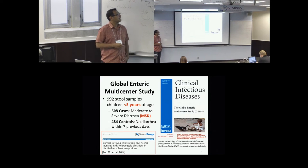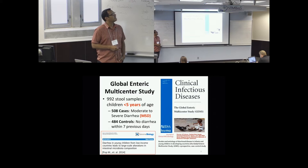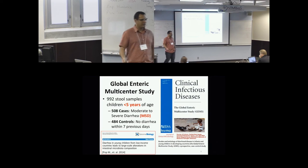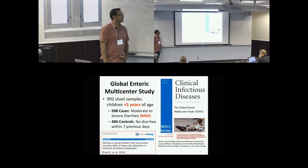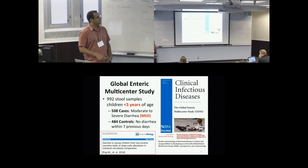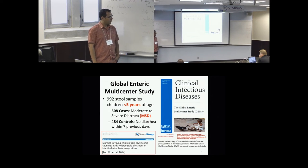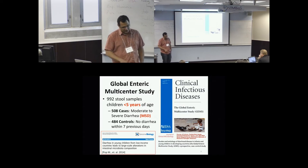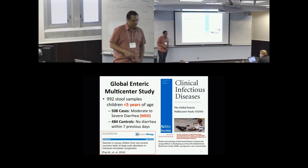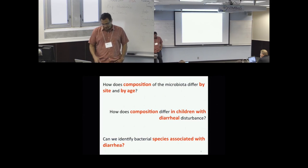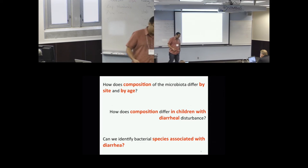In particular, one dataset that we started studying is roughly 1,000 stool samples for children under five years of age, some of which had shown moderate to severe diarrhea at some point before the study, and controls that had shown no such phenotype. The results of that study were published in Genome Biology last year.